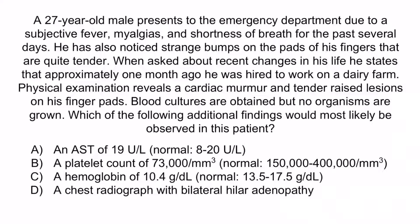A is incorrect because Q fever also causes hepatitis, so a normal AST would be less likely than an elevated AST. C is incorrect because anemia is an extremely rare finding in Q fever — so rare that we didn't even include it in the image, as thrombocytopenia is much more common. D is incorrect because while Q fever can cause pneumonia, bilateral hilar adenopathy is suggestive of sarcoidosis, not pneumonia. So again, the correct answer is B, a platelet count of 73,000. And with that, we've covered everything you need to know about Coxiella Burnetii.